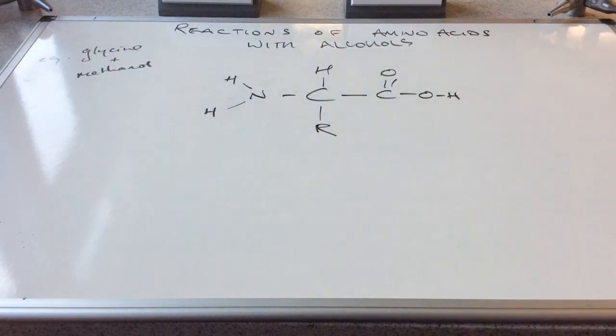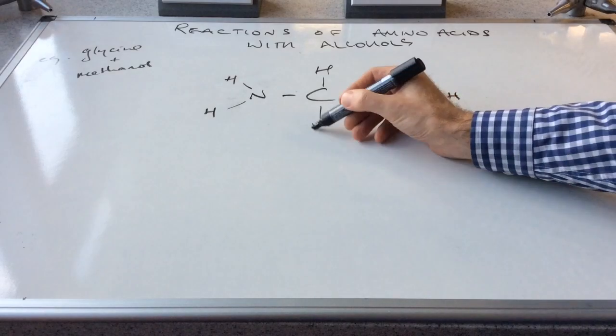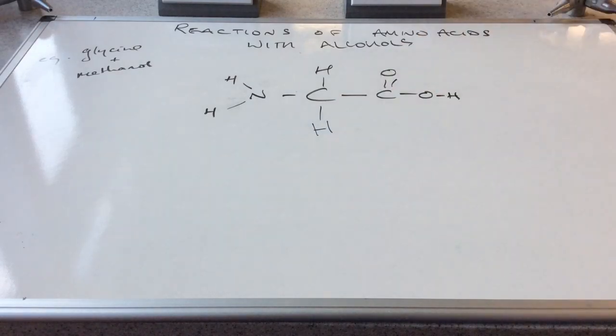So we'll finish with the reaction of amino acids with alcohols now. So you can see on the top left there I've written e.g. glycine with methanol. So I very quickly just need to change this general structure into glycine. That's where the R group is just an H. So how does this react with an alcohol such as methanol? Well, what part of the molecule is going to react? It's this carboxylic acid part.